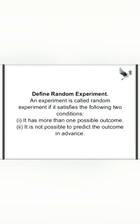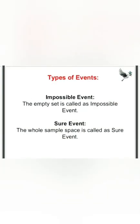In probability, we often use the term random experiment. An experiment is called a random experiment if it satisfies two conditions. First, it must have more than one possible outcome. Second, it is not possible to predict the outcome in advance. When both conditions are fulfilled, the experiment is called a random experiment.